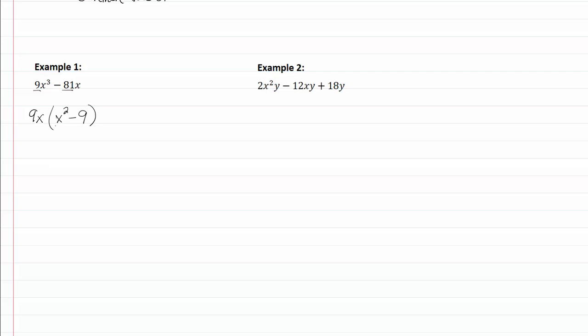Now I need to look at this again, notice that inside my parentheses I have a difference of squares. So that means that can still be factored, so I need to do that first.